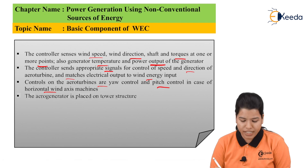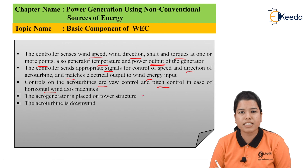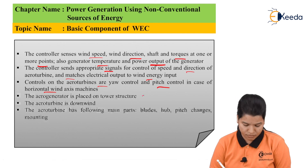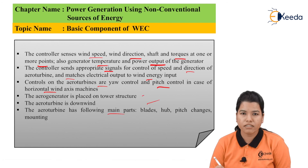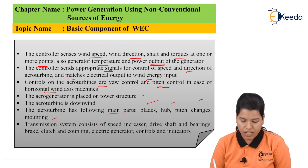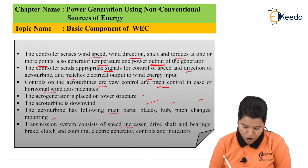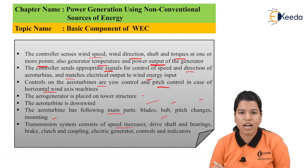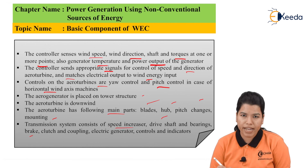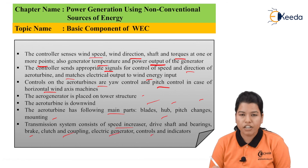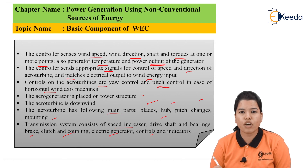The aero generator is placed on the tower structure. The aero turbine is downward. The aero turbine has the following main parts: blade, hub, pitch changes, and mounting. The transmission system consists of a speed increaser, drive shaft and bearings, brake, clutch and decoupling, electric generator, controls, and various indicators. So these are the various components of WEC.